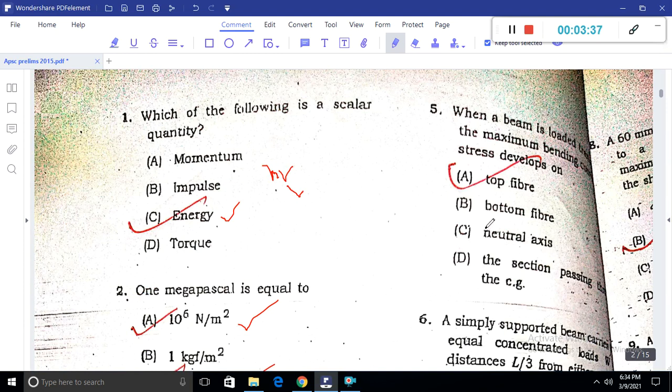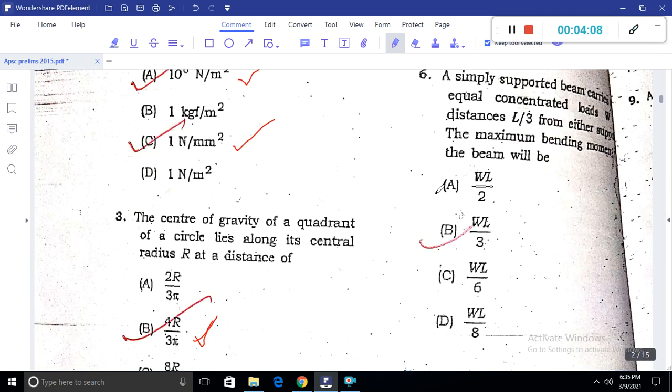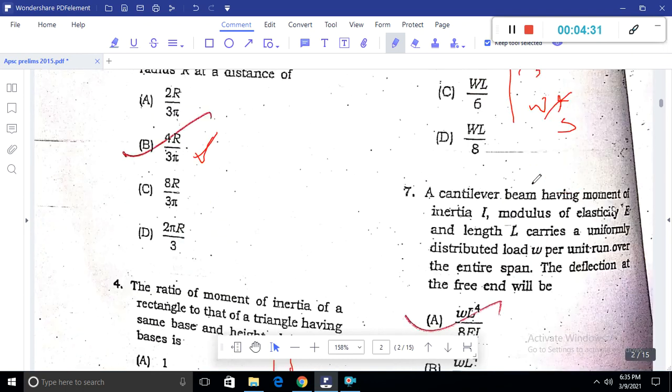Question 5: When a beam is loaded transversely, the maximum bending compressive stress is developed at the top fiber. Question 6: For a simply supported beam carrying equal concentrated load W at distance L/3 from either support, the maximum bending moment will be WL/3.